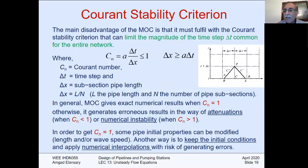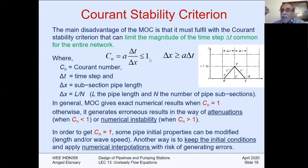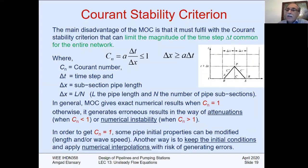This is called the Courant stability condition. All of this is about fulfilling the Courant condition to make the analysis proper. The Courant number Cn must be less than or equal to 1 — meaning a times delta t divided by delta x must be less than or equal to 1. The optimum is Cn equal to 1, i.e. delta x equal to a times delta t, which means the characteristic lines fall exactly on the grid corners. If Cn is less than 1, interpolation is needed; if Cn is greater than 1, there is numerical instability, which is not allowed.